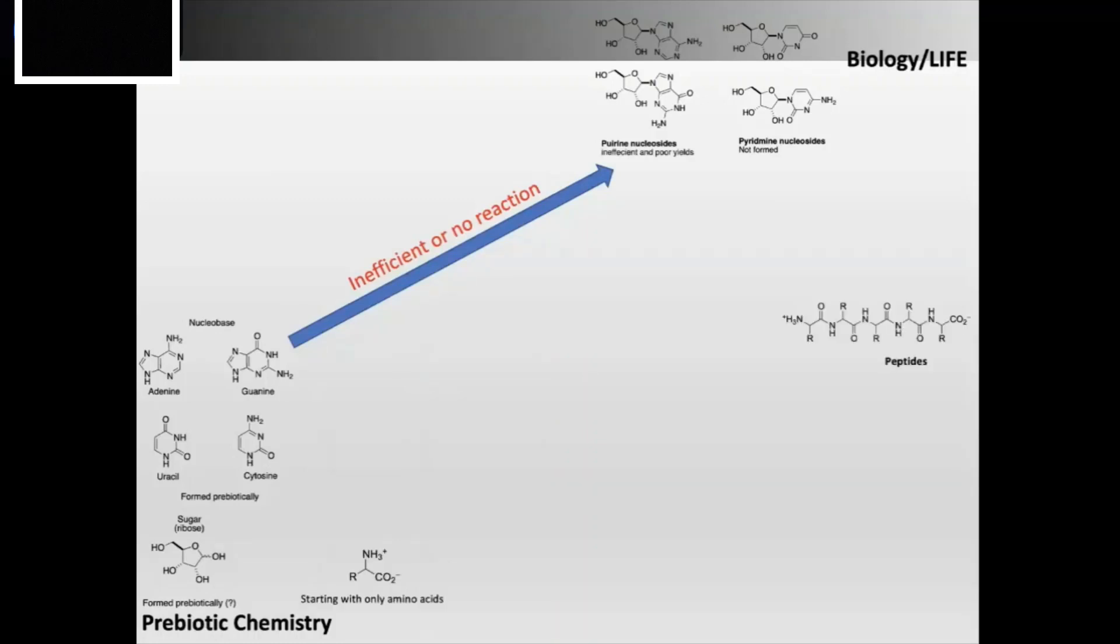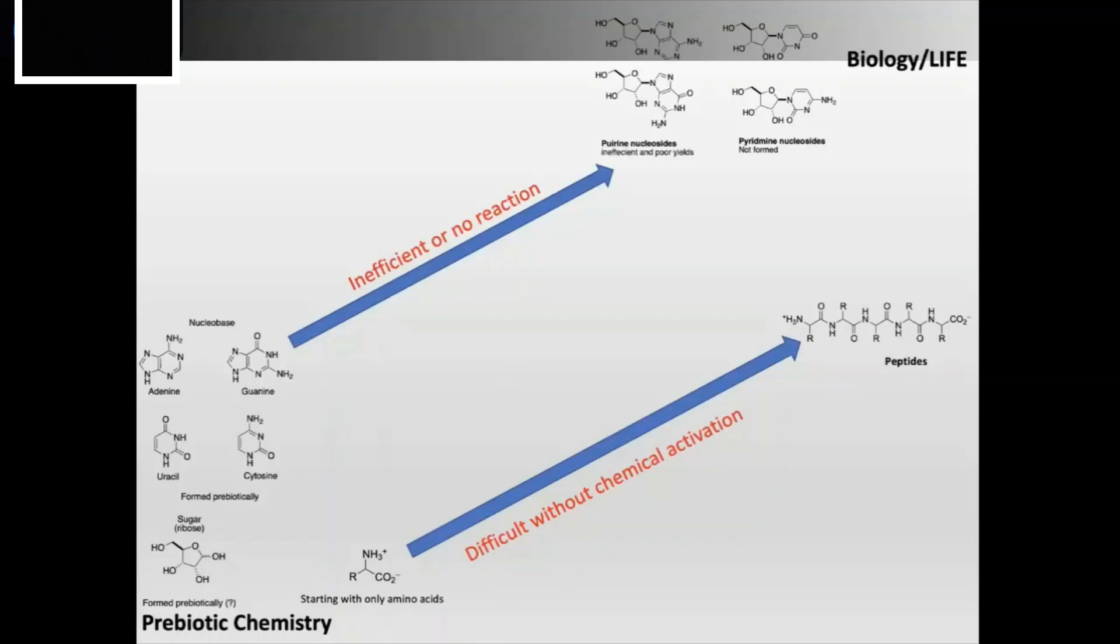The same is true for amino acids. If you start only with amino acids, you can try to bring them together. But again, it involves quite a lot of manipulation in the lab to do that without chemical activation. They don't come together on their own. So what this tells us is this type of approach of trying to connect prebiotic chemistry on early earth to extant biology that life is using today is probably not the best approach to look at it.